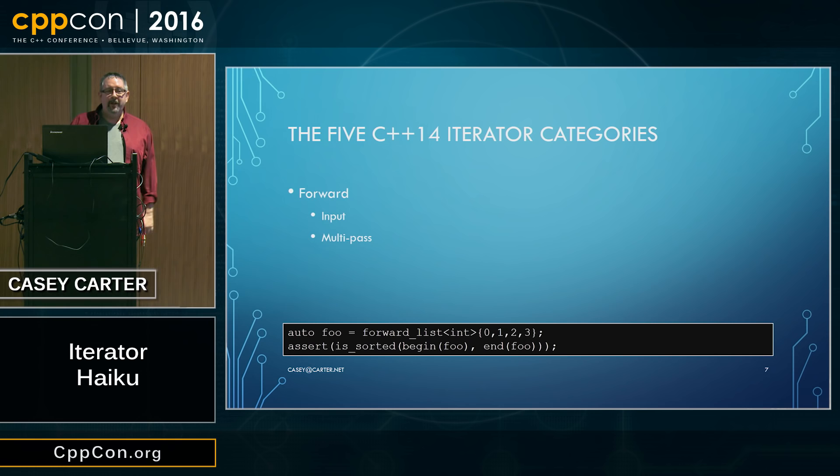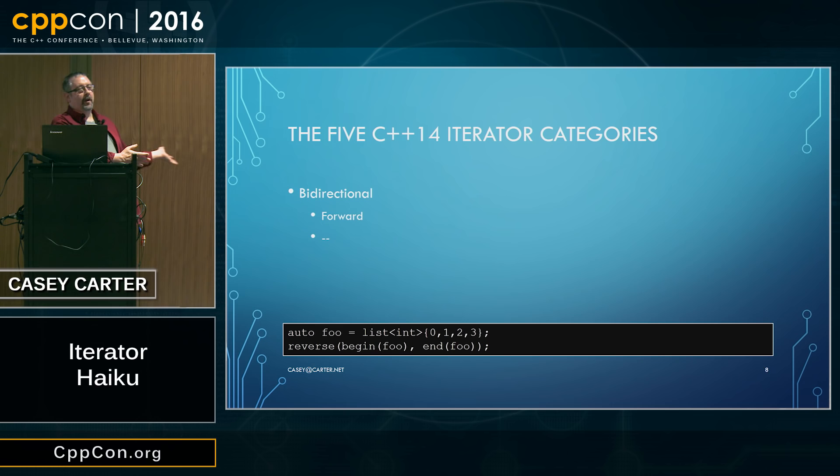Bidirectional iterators have all the properties of forward iterators, plus they can be decremented — we can move them backwards through the sequence as well as forwards. The example for this is a doubly-linked list. With a doubly-linked list, I can move forward through the list and I can move backward through the list. It's a bidirectional iterator.